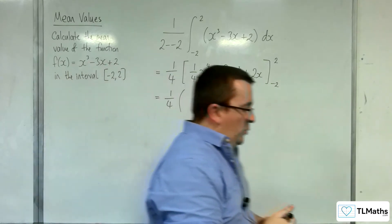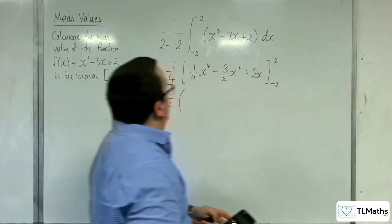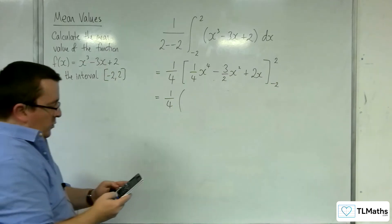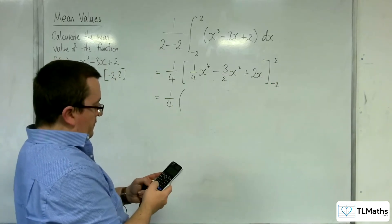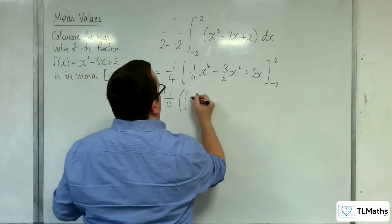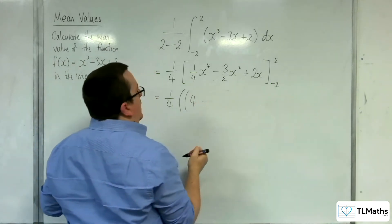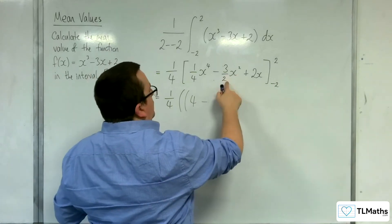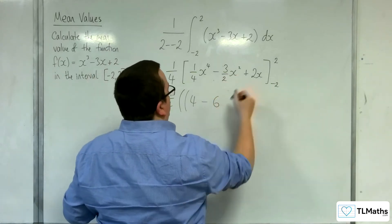So we're going to substitute the 2 in first. So we have 1 quarter times 2 to the 4, which is just going to be 4. So we've got 2 squared is 4, so take away 6 plus 2 lots of 4.